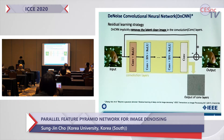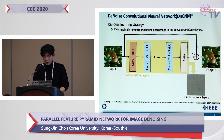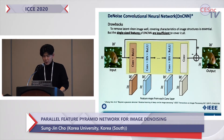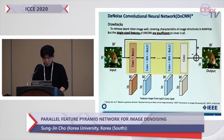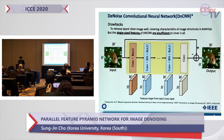The residual learning makes the network predict the difference between the noisy image and the clean image. In other words, DnCNN removes the clean image in the convolutional layers. To remove the clean image, the network should cover the characteristics of the image structure. Each block at the bottom of the figure is the output of a convolution layer of DnCNN, and all feature maps have the same size as the input. These single-sized feature maps are insufficient to cover the full characteristics of the image structure.